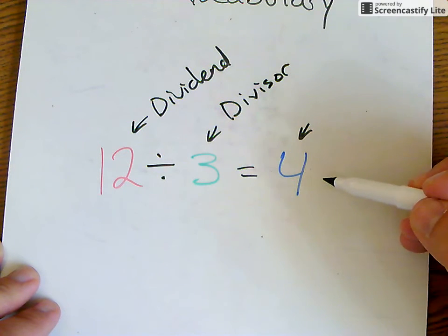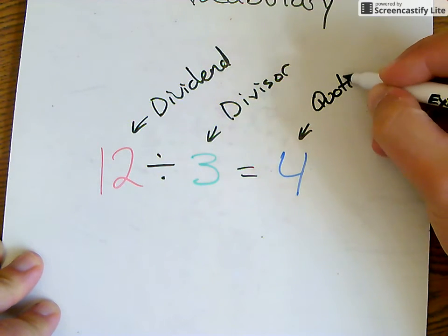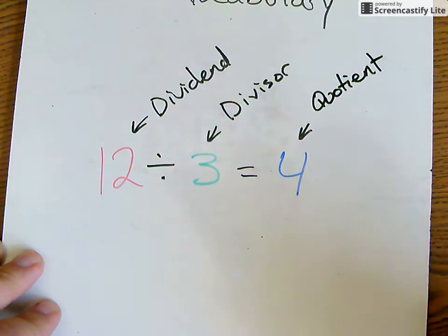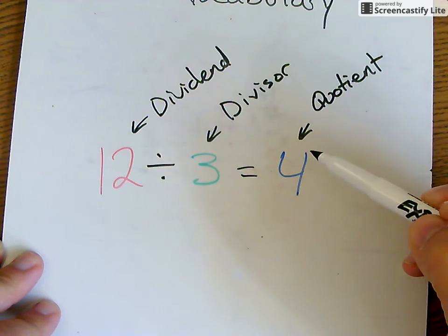And then finally, the last number is the answer to the division problem which has a special name. That is the quotient. Okay, so the dividend is the first number, the divisor is the second number, and the quotient is the answer or the final number.